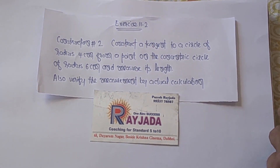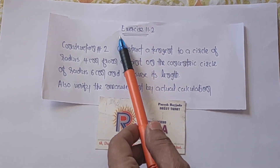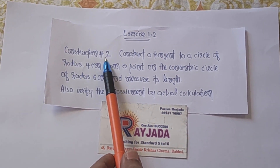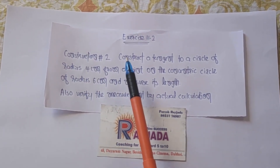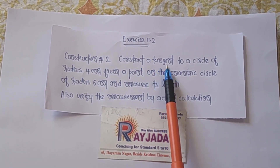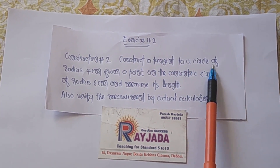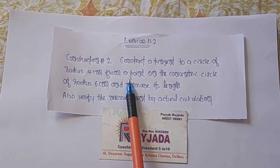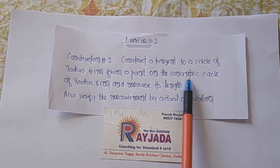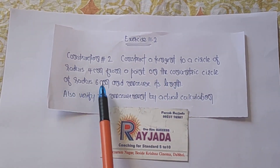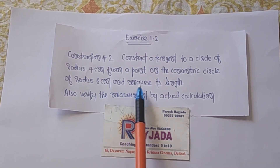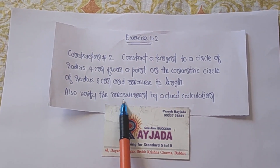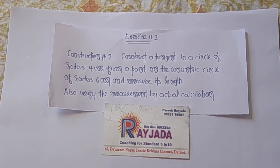Namaskar dosto. Exercise 11.2, Construction No. 2. Construct a tangent to a circle of radius 4 cm from a point on the concentric circle of radius 6 cm and measure its length. Also verify the measurement by actual calculation.